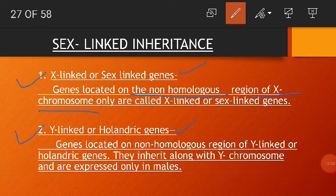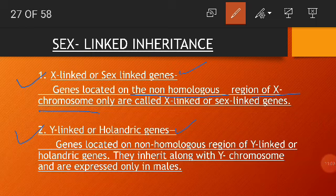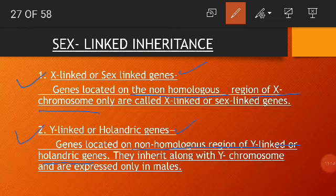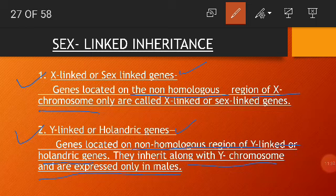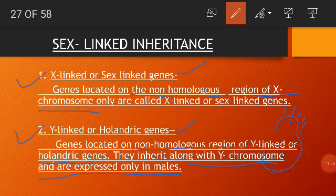Y-linked genes, also called holandric genes, are located on the non-homologous region of the Y chromosome. They are inherited along with the Y chromosome and are expressed only in males. For example, hypertrichosis — the excessive growth of hair on the ear pinna — is seen in some males and is an example of a Y-linked trait.